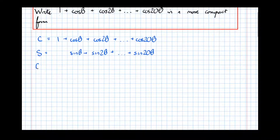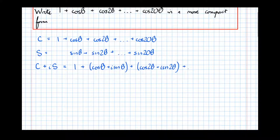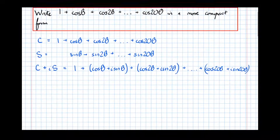So now I'm going to calculate the sequence C plus iS. That's equal to 1 plus — gathering the corresponding vertically aligned terms — cos theta plus I sine theta, plus cos of 2 theta plus I sine of 2 theta, and so on. The whole key to getting this correct is remembering that the cosine sequence C is simply the real part of this expression.